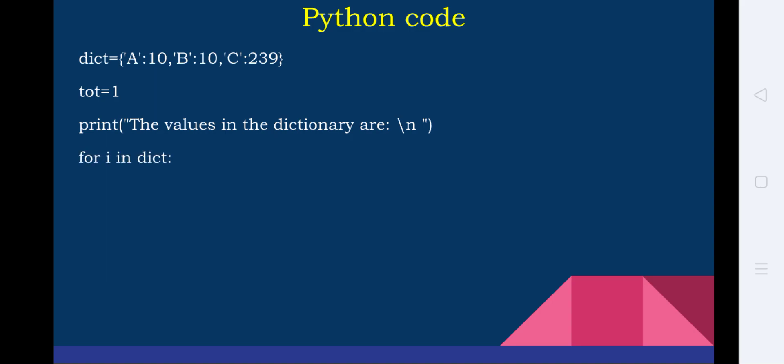And then for I in dict. This is a for loop, simple for loop. TOT is equal to TOT into dict of I. What it will do is, initially TOT is equal to 1. And now when you come to the first, when I is equal to 1 or the first value comes, TOT is equal to 1 into 10, which is the A value. Likewise, this for loop repeats again and again till all the values are exhausted. So how the calculation will go?